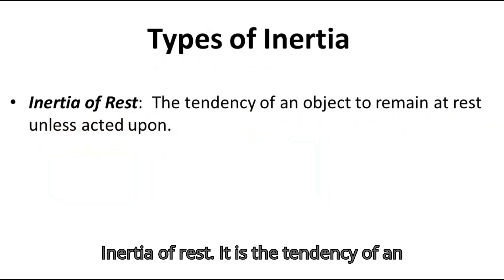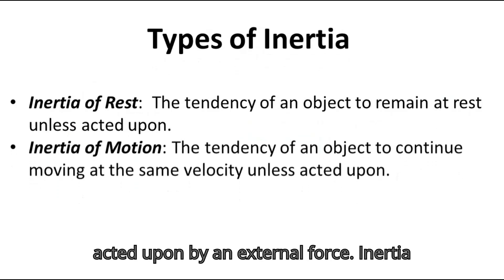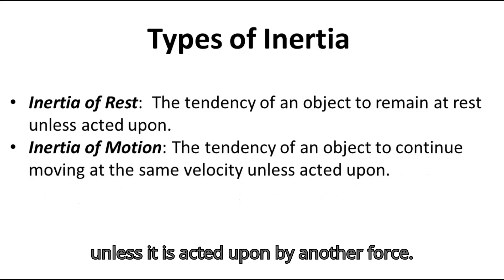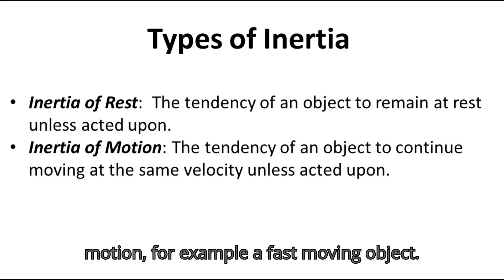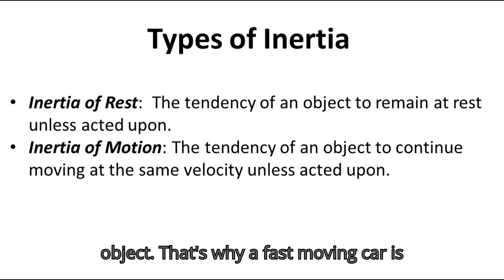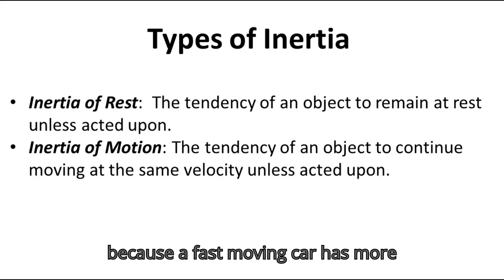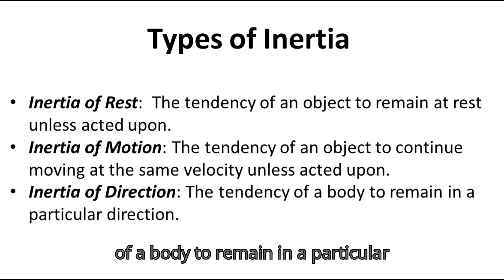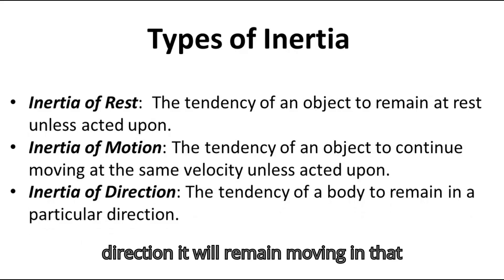There are three main types of inertia. Inertia of rest is the tendency of an object to remain at rest unless acted upon by an external force. Inertia of motion is the tendency of an object to continue its motion at the same velocity unless acted upon by another force — a fast-moving object has more inertia than a slow-moving one, which is why a fast-moving car is harder to stop. Inertia of direction is the tendency of a body to remain moving in a particular direction.